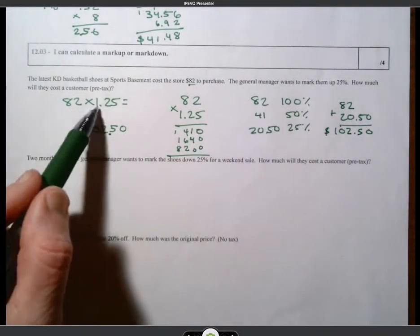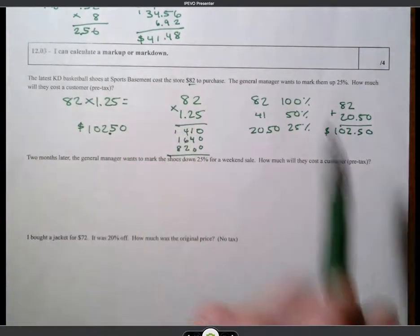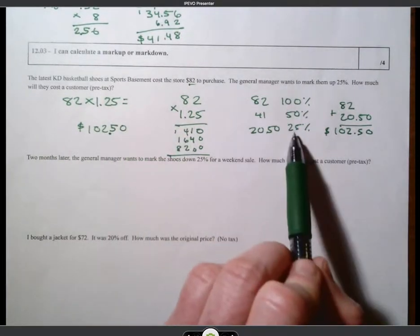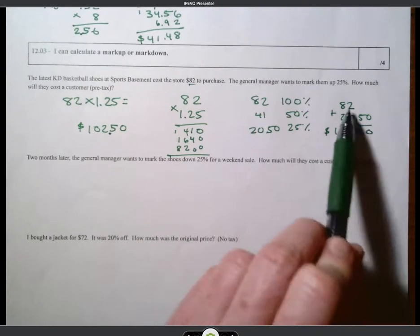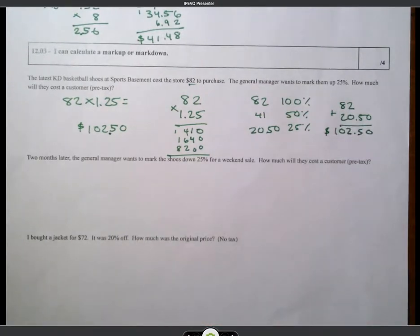Could have multiplied by 1.25. Or I could have found, just use mental math, found 25% and added it to the original amount. Okay, now,